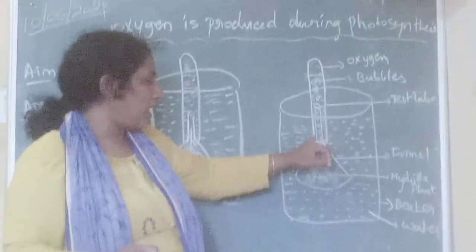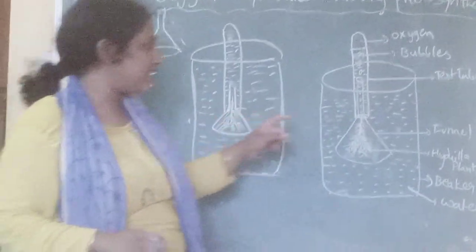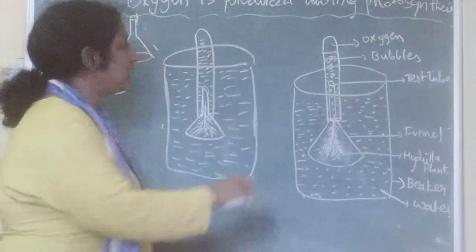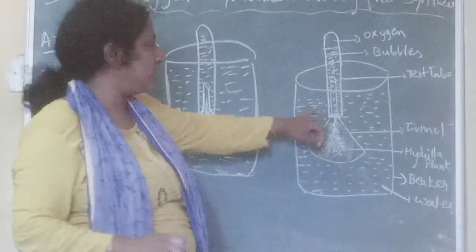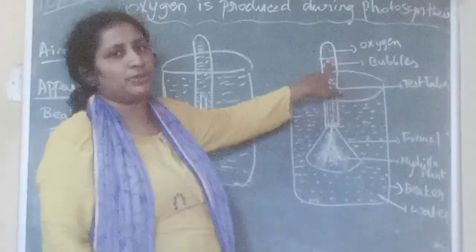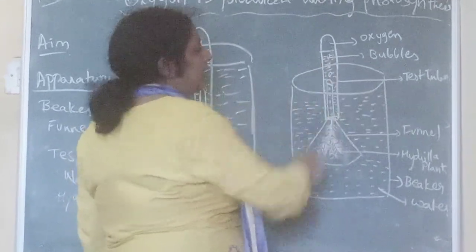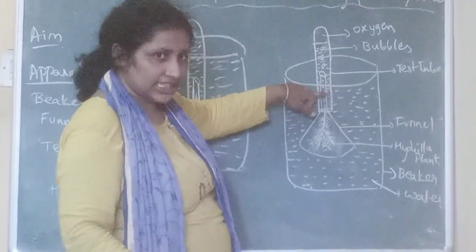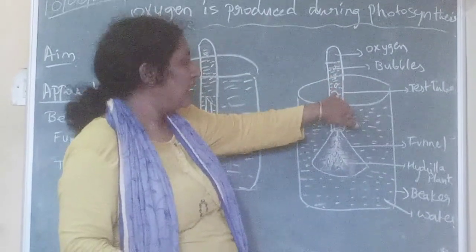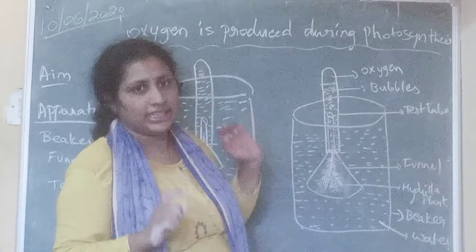On the stem of the funnel, insert one test tube containing water over the stem. The water in the test tube should be definitely above the tip of the funnel. If the water is not above the tip of the funnel, the setup will not work correctly.